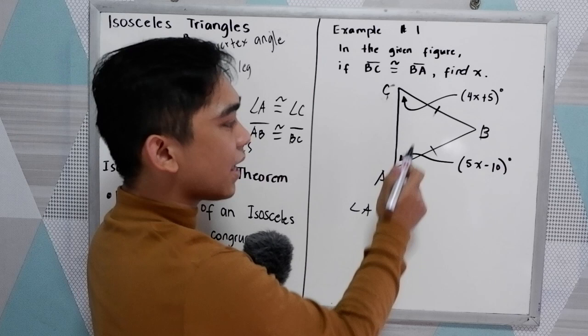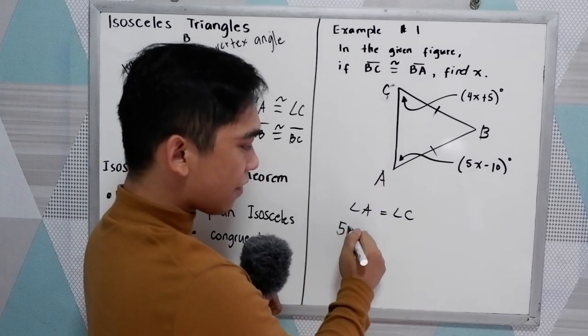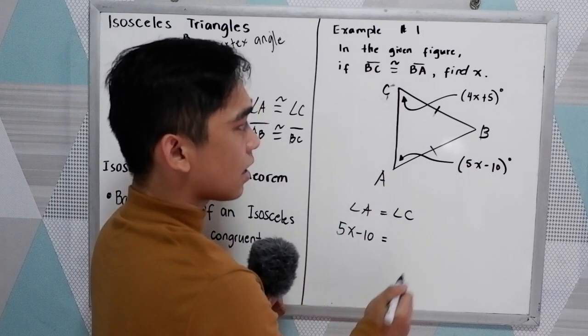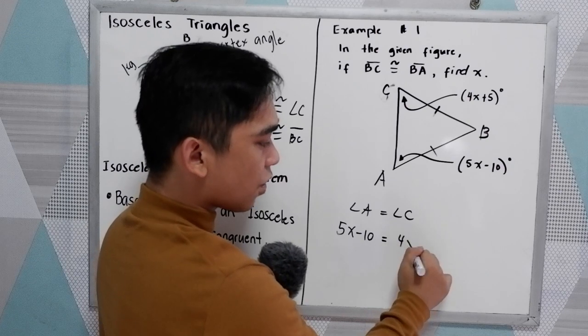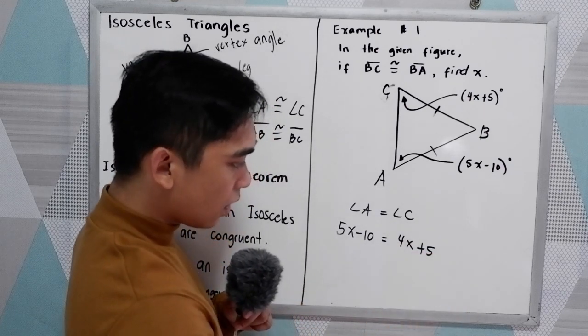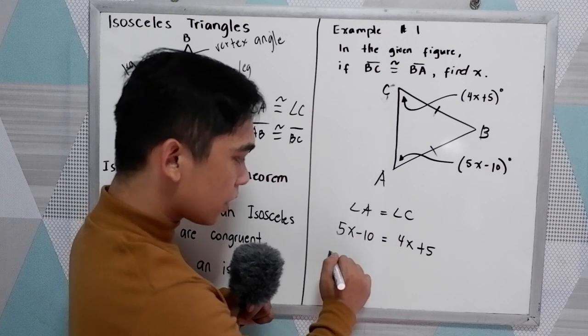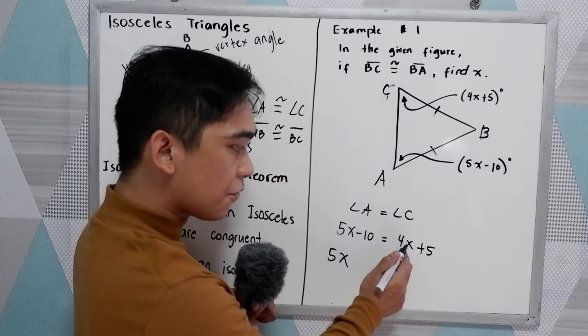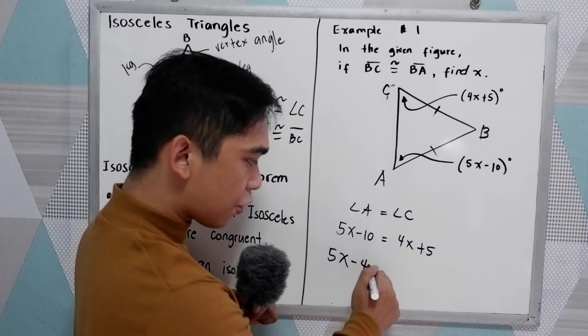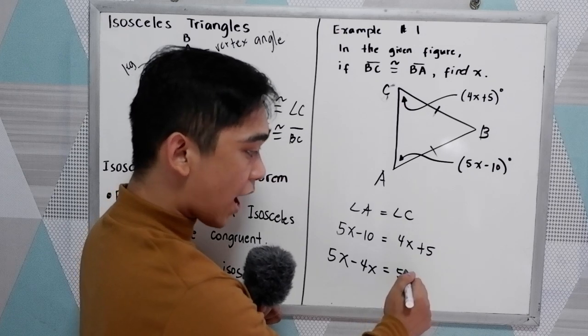So our angle A is 5X minus 10. And our angle C is 4X plus 5. Solve for X. So 5X. Positive 4 moves to the left. That will become negative 4X. Is equal to 5.